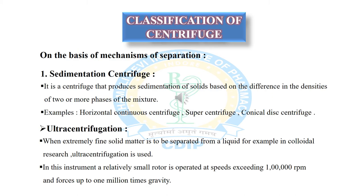Now the classification of centrifuge: on the basis of mechanisms of separation, there are two types — sedimentation centrifuge and filtration centrifuge. A sedimentation centrifuge produces sedimentation of solids based on the difference in densities of two or more phases of the mixture. Examples include the horizontal continuous centrifuge, super centrifuge, and conical disc centrifuge.